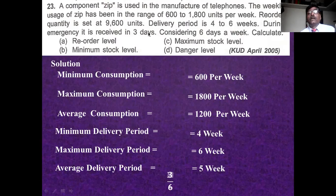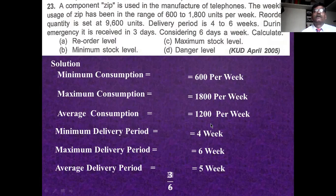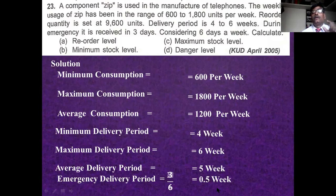The emergency delivery period is given in days, but all other information is in weeks, so we must convert. Six days equals one week, so three days equals half a week. Therefore, emergency delivery period = 3/6 = 0.5 weeks. Everything must be confirmed to be in the same time unit.